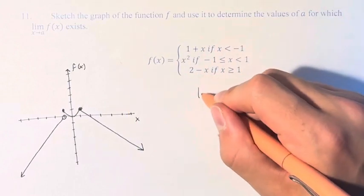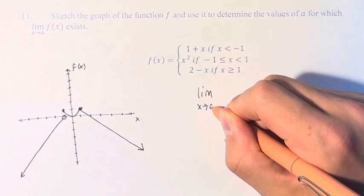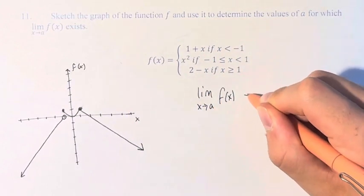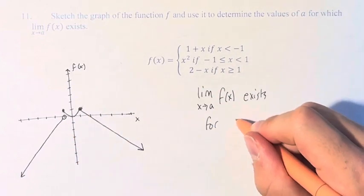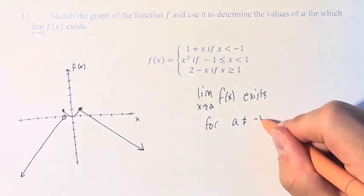Therefore, the limit as x approaches a of f(x) exists for values of a not equal to negative 1.